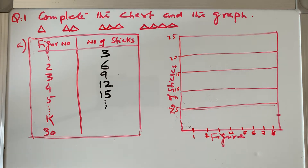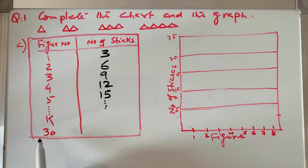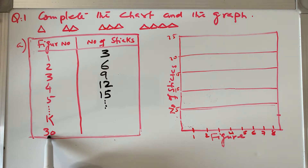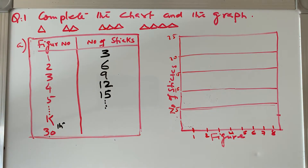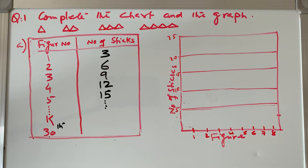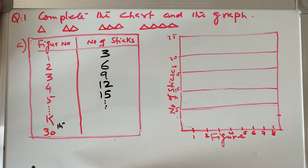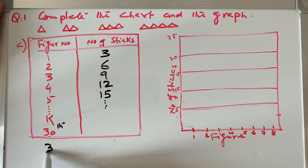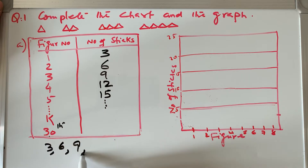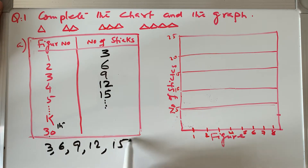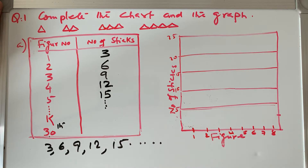We need to find the nth term — or the kth term — because we have to find out how many sticks are in the 30th figure. K and n refer to the same concept; you can use any variable. So the sequence is 3, 6, 9, 12, 15, and so on up to the kth term.